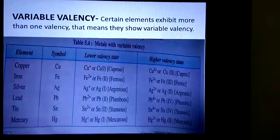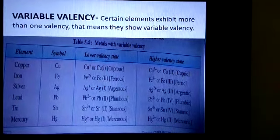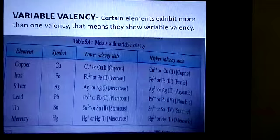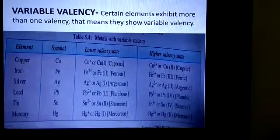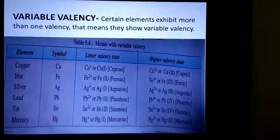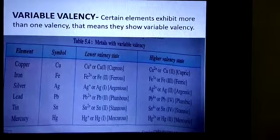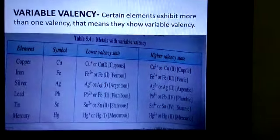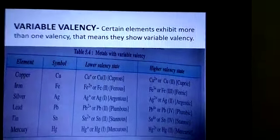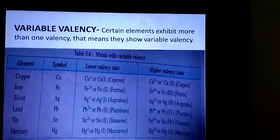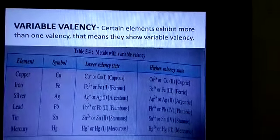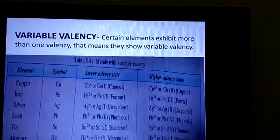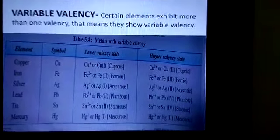The next is variable valency. Certain elements exhibit more than one valency. That means they show variable valency. For example, copper. Copper has 2 valencies, that is 1 and 2.